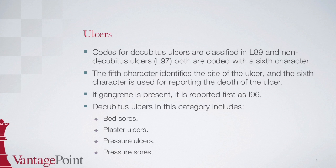In ICD-10, both decubitus and non-decubitus ulcers require a sixth character indicating the depth of the ulcer, while the fifth character indicates the site, such as the hip or the heel. If gangrene is present, it is reported with code I-96 and is reported before the ulcer code or codes. Decubitus ulcers include bed sores, plaster ulcers, pressure ulcers, and pressure sores.